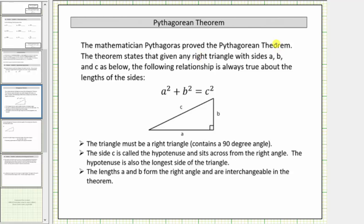The theorem states that given any right triangle with sides a, b, and c, the following relationship is always true about the lengths of the sides: a squared plus b squared equals c squared.